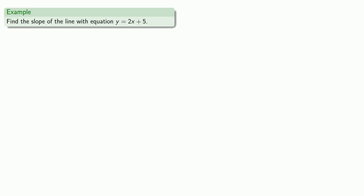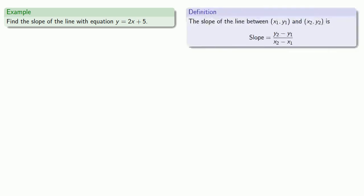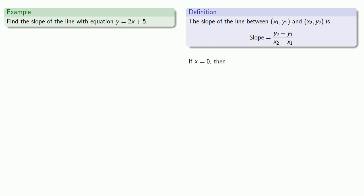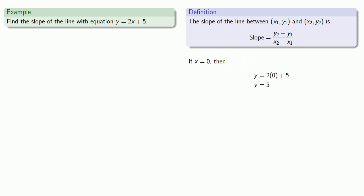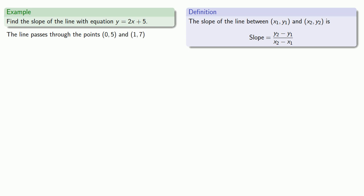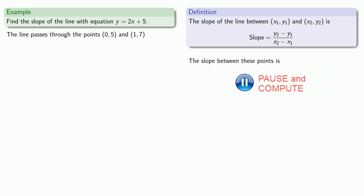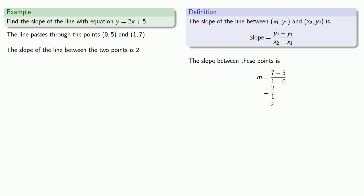How about the slope of the line with equation y equals 2x plus 5? All we need are two points on the line. Let x equal 0 and find y, which gives us the point (0, 5). We need another point, so let x equal 1; then y equals 7, giving us the point (1, 7). We have two points, so we can find the slope between them, which works out to be 2.